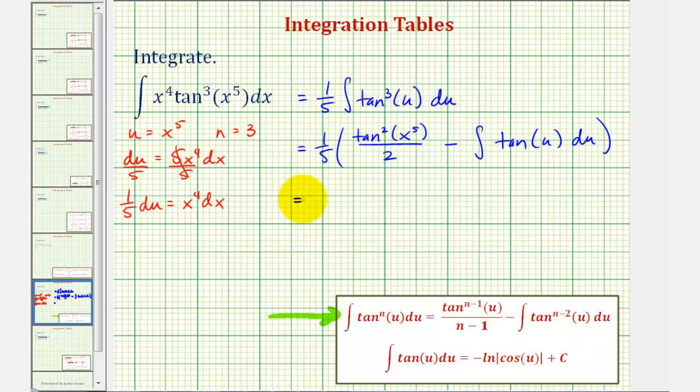This equals one-fifth times tan^2(x^5) divided by 2. Since we're subtracting a negative antiderivative, it becomes plus natural log of the absolute value of cosine u.